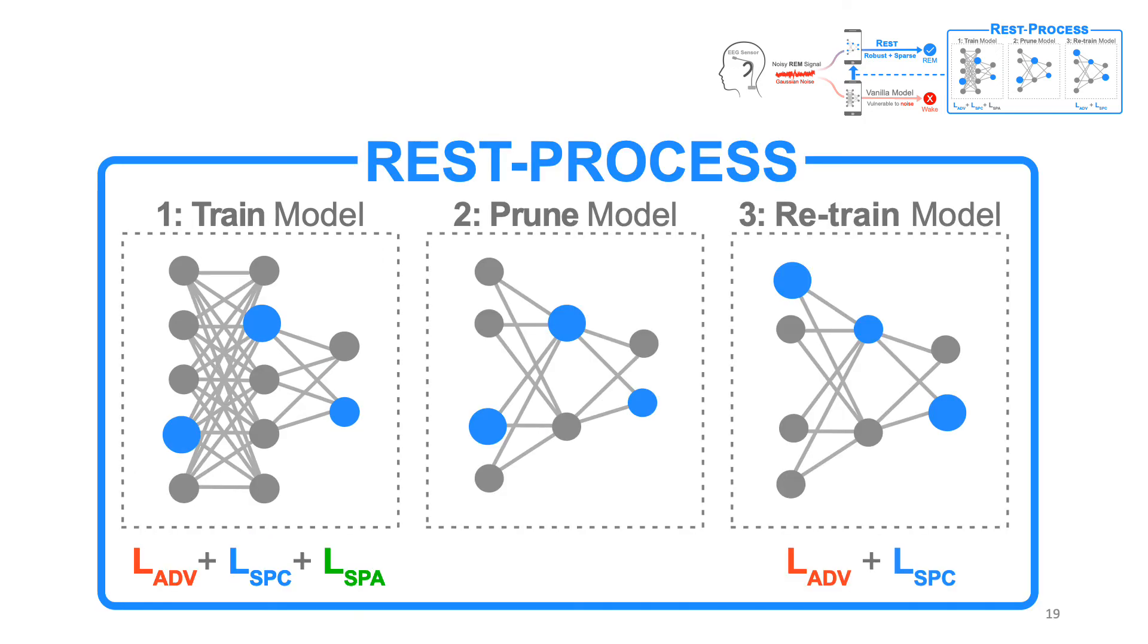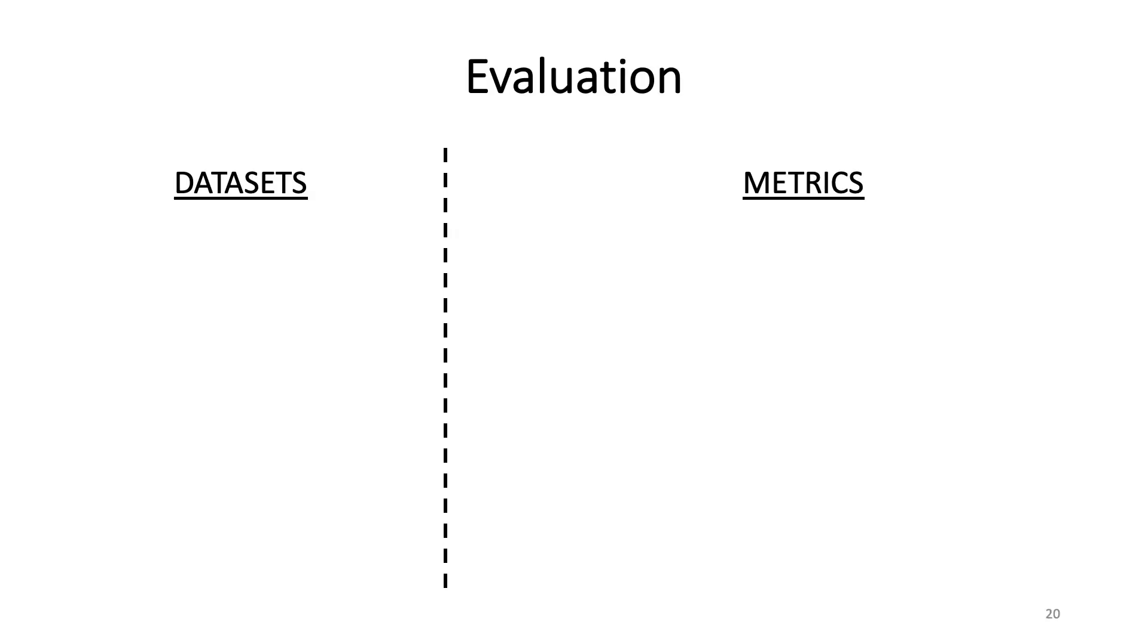Thus to recap, our REST process consists of three phases. In the first phase, we train the model with three loss functions. In the second phase, we prune our model. In the third phase, we retrain the model with only two loss functions. Next, we will look at the evaluation that we perform for all of the methods in our paper.